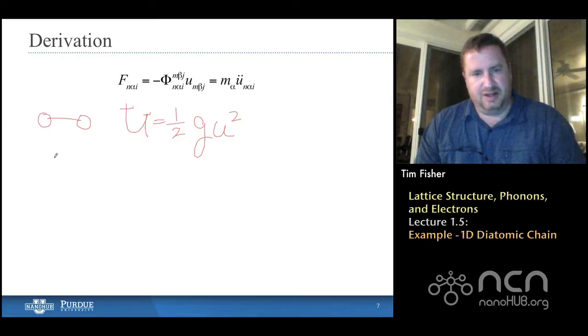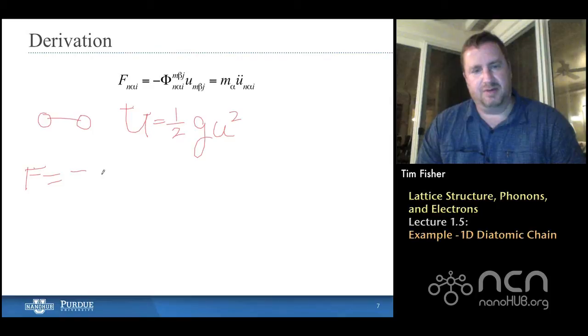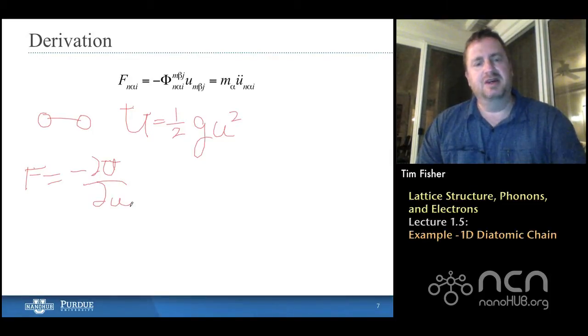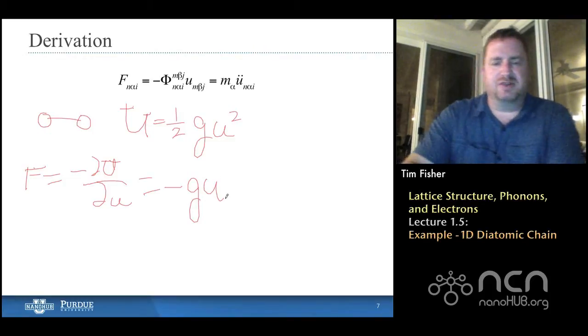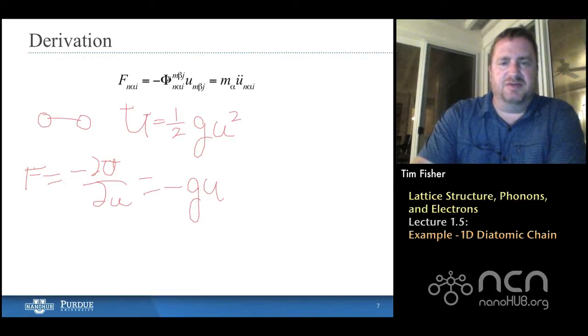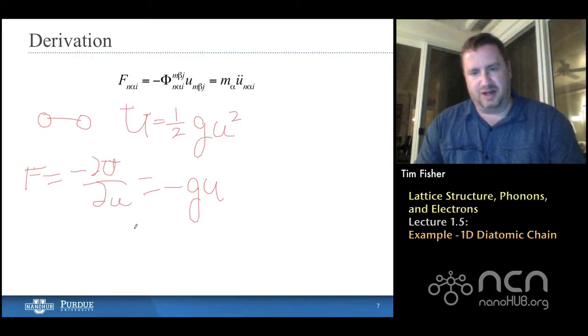Well, now if we say that F, the force, equals minus the partial of U, this is the potential energy with respect to U, the displacement, right? Well, if we just simply calculate this, that will equal minus G times U. Well, that looks very similar to what we have here for this phi times U. In this case, it would imply that this phi term would equal the spring constant.